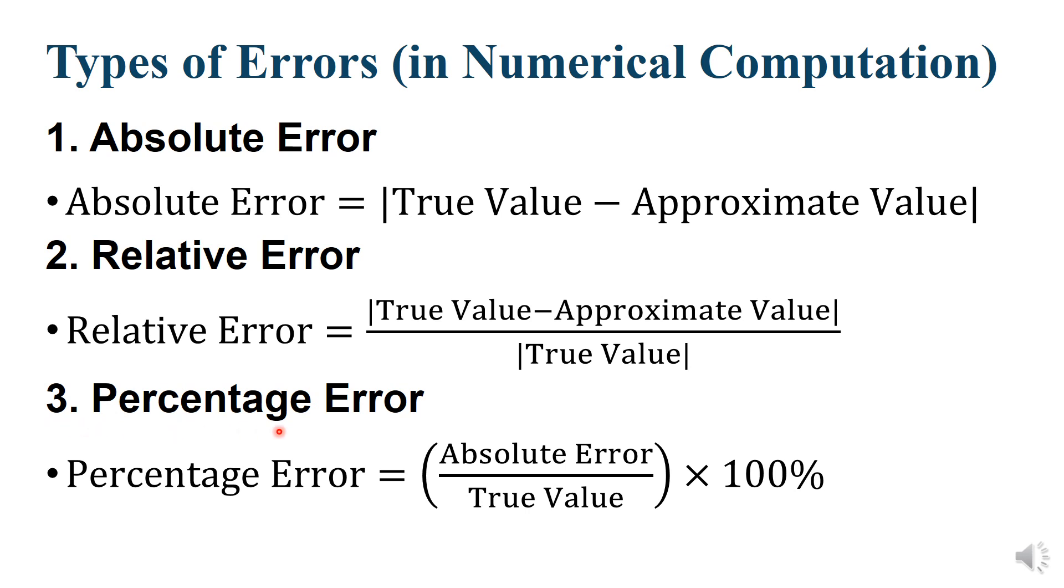Third point, Percentage Error. Percentage Error equals Absolute Error divided by True value, multiplied by 100%.